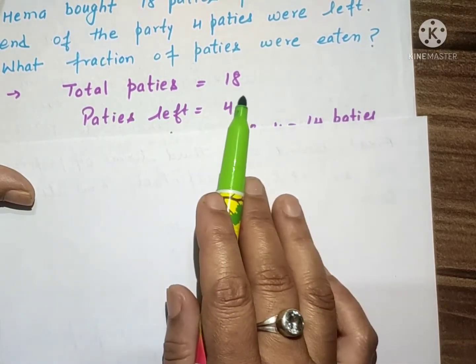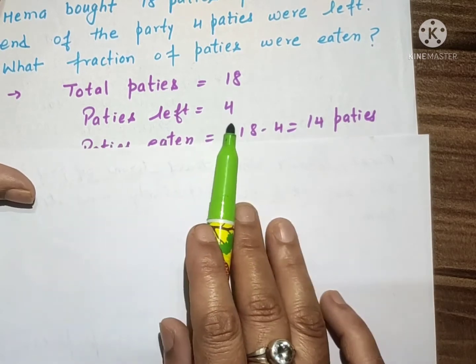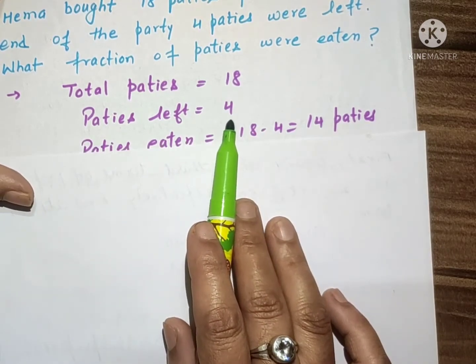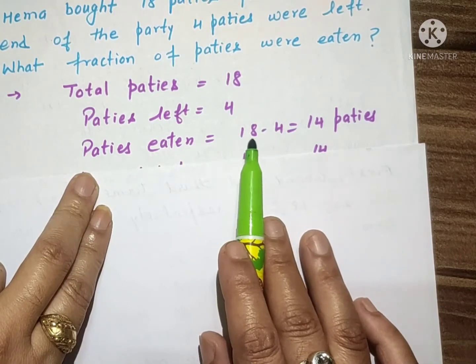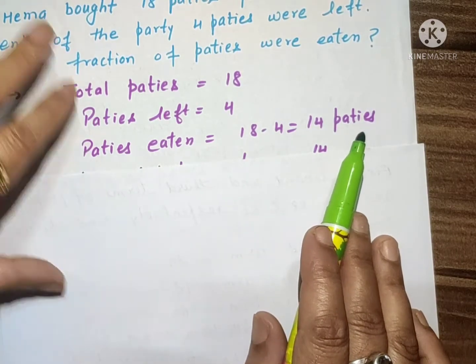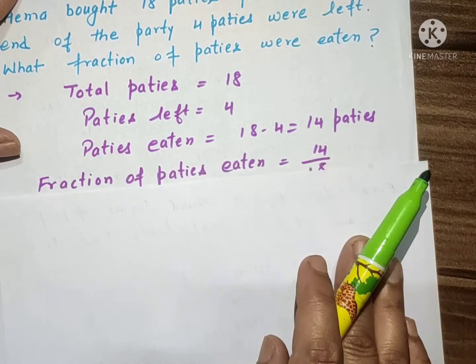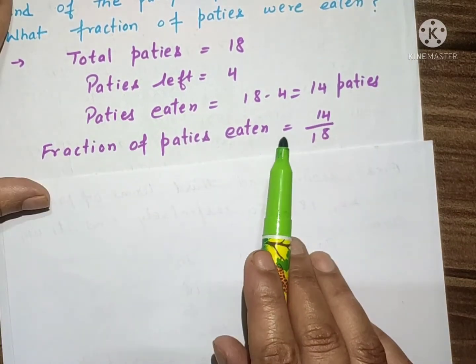First we will write: Total patties = 18, Patties left = 4, kitne bachi thi 4. Patties eaten - agar 4 bachi thi toh khai kitne? 18 minus 4, that is 14 patties jo hai woh party mein khai gai. Toh fraction of patties eaten...